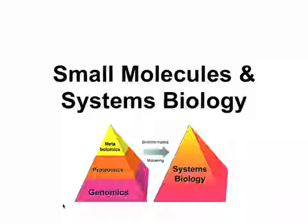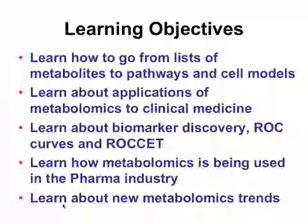I'm going to introduce you to a couple of things. We're partly talking about how to go from small molecules to systems biology. We're going to talk about getting lists of metabolites and how to go to pathways and also to cell models. We'll learn about applications of metabolomics to clinical medicine, the use of biomarkers, biomarker discovery, receiver operator characteristic curves, a software tool called ROCKET, metabolomics in the pharma industry, and some new trends in metabolomics.